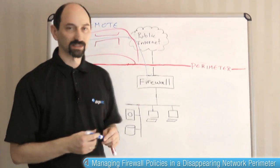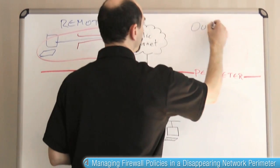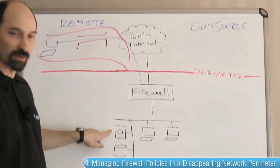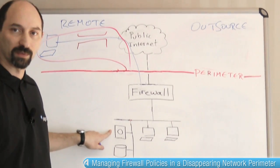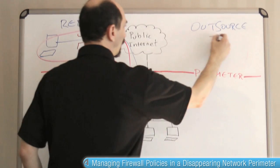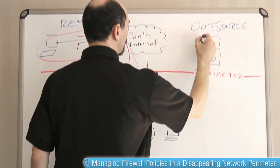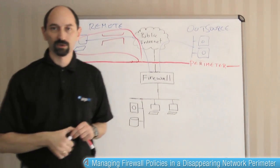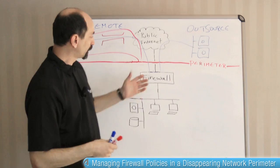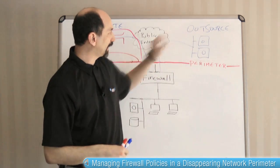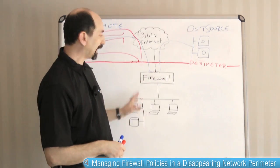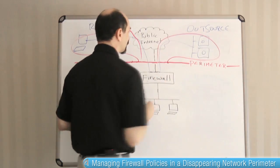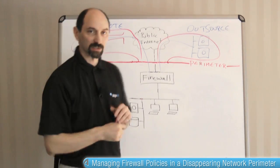The second trend that we're seeing is outsourcing. We have some of the traditional servers that used to be in our network — now they're outside on the outsourcer's network, connected to some network and then into our corporate environment. From a firewall perspective, we have to control traffic into the outsourcer's environment and out of it, which means the perimeter also extends further, and the picture gets more complicated.